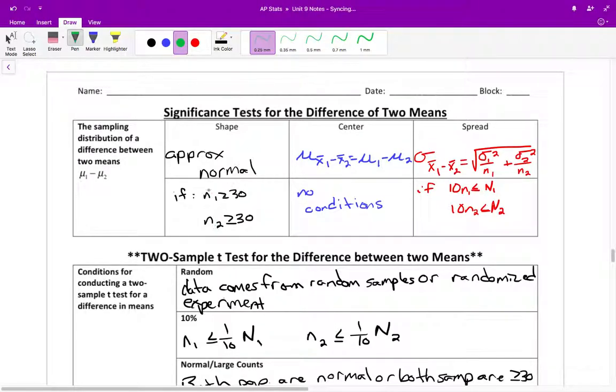If both of your sample sizes are at least 30, n1 is greater than or equal to 30, and n2 is greater than or equal to 30, then you can say that it's approximately normal. No n times p. There is no p. There is no proportion that we're looking at. So just looking at large counts, or if it says that both of the populations were normal, then obviously you don't even need to check this.